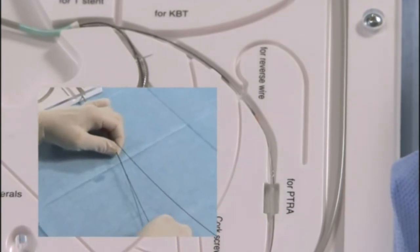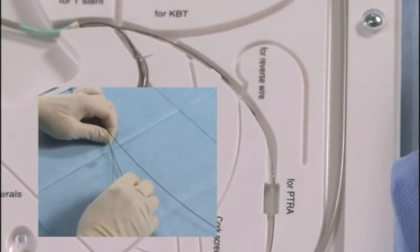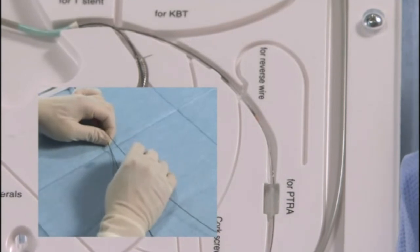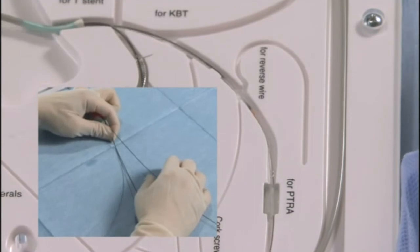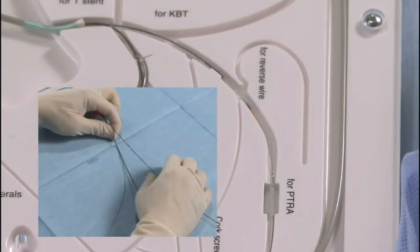Grip the guide wire and anchor balloon firmly with the index finger and thumb of the left hand and pull back slightly. In this position, the backup force of the system is high enough to allow the balloon to pass through even the most severe stenosis.